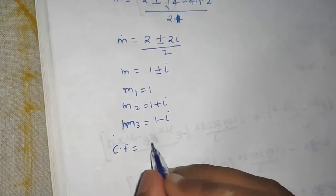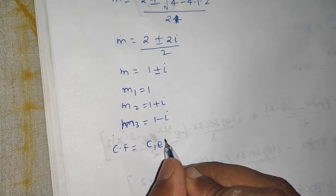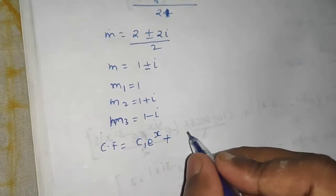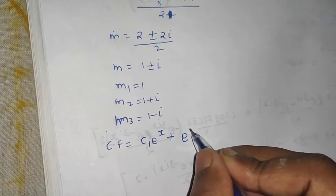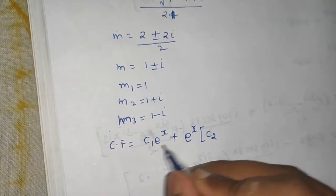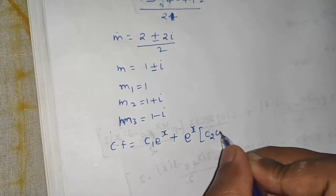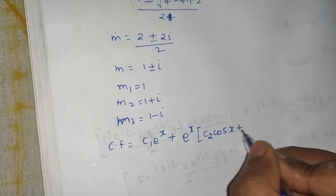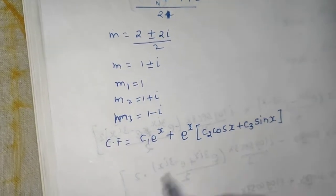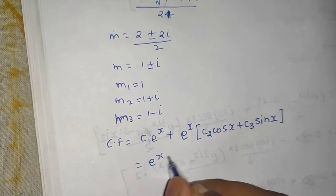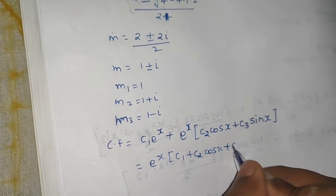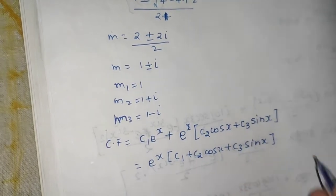Now we can write the complementary function. For the real distinct root m₁ = 1, we write c₁·e^x. For the complex conjugate pair 1 ± i (where a=1, b=1), we write e^(1·x)·(c₂·cos x + c₃·sin x). Taking e^x as common, the complementary function is: CF = e^x·(c₁ + c₂·cos x + c₃·sin x).